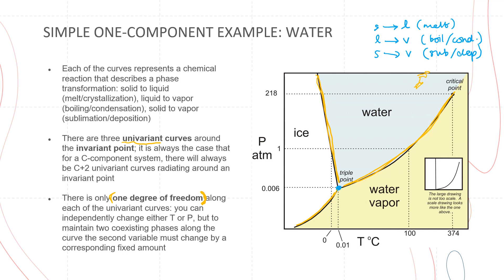Along the univariant curves, you can independently change temperature or pressure. But to maintain the two coexisting phases along the curve, the second variable must change by a corresponding fixed amount. So if you were to change pressure, it will also change the temperature by a corresponding fixed amount.